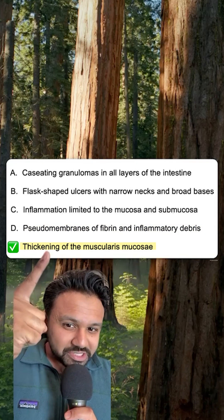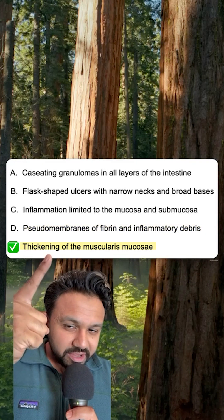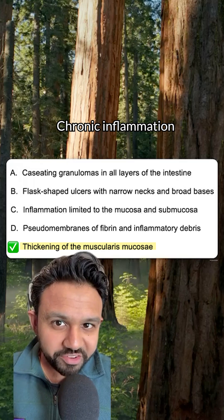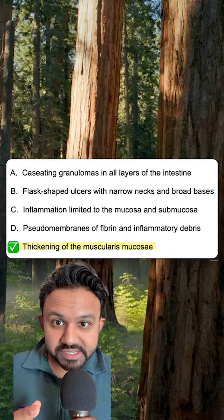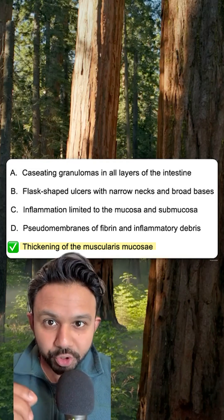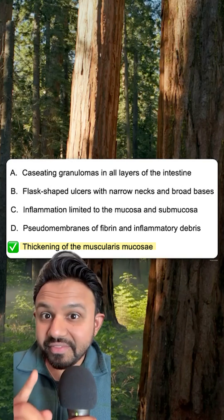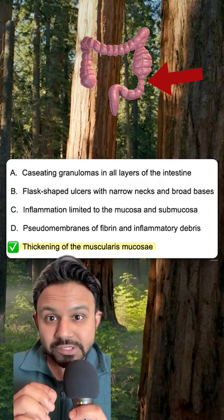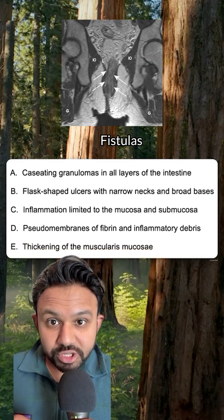For Step 1, remember that the toxin is going to disrupt the cytoskeleton of the enterocytes leading to pseudomembrane formation. Answer choice E: thickening of the muscularis mucosa. This refers to chronic inflammation by Crohn's disease — transmural inflammation that can lead to strictures as well as fistulas.